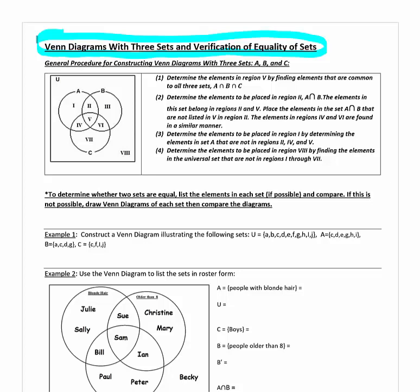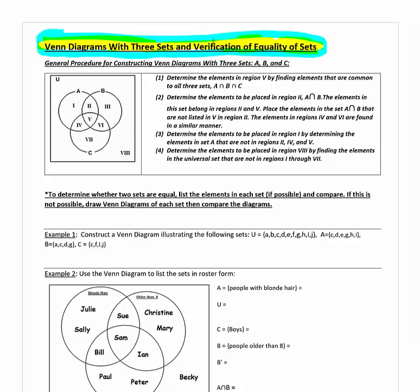If you kind of follow the procedure and definitely watch all the examples in this video, you can always come back and try to model any homework problems you're doing in these types of ways. One good thing is that there's not a lot of new theory — no new definitions or anything like that. It's all the same definitions and symbols as the last section, but now we're throwing in a third set, which complicates things a lot. The section is called Venn Diagrams with Three Sets and then Verification of Equality of Sets — that's kind of a new topic, and it plays a smaller role. We'll talk about that in a little while.